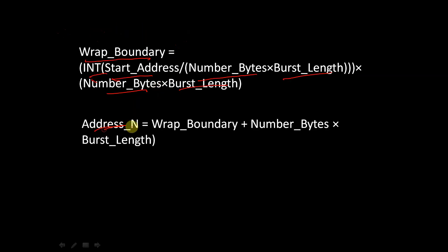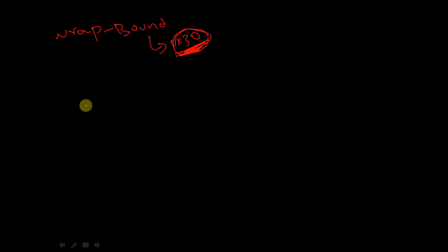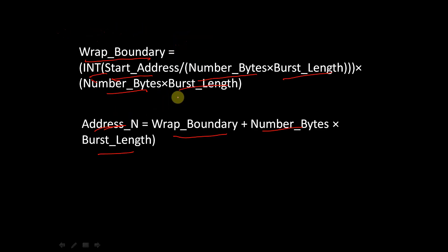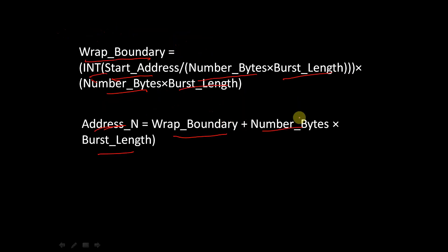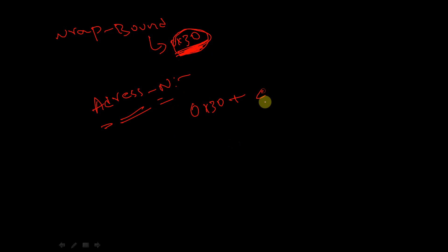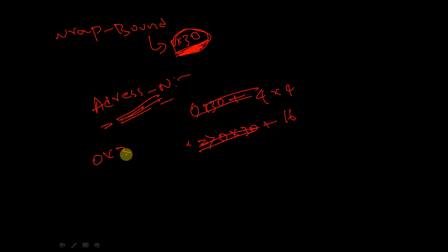Now, when should we wrap around to this address? That is given by address_n, which equals wrap_boundary plus number_of_bytes times burst_length. Address_n tells us when we should get back to this wrap boundary. So it is: wrap boundary 0x30 plus number_of_bytes times burst_length — number of bytes is 4 and burst length is 4. Let us convert 0x30 again to decimal, which gives 48.